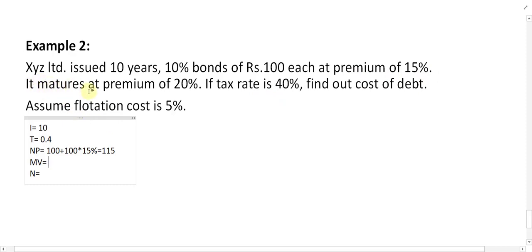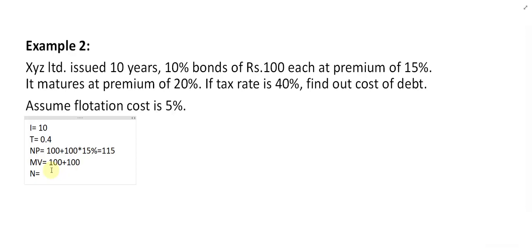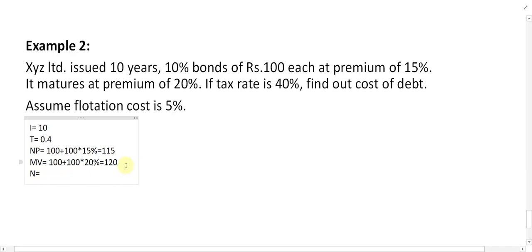It is mentioned that the bond matures at a premium of 20%. So maturity value MV equals 100 multiplied by 1.20, which gives MV equals 120.